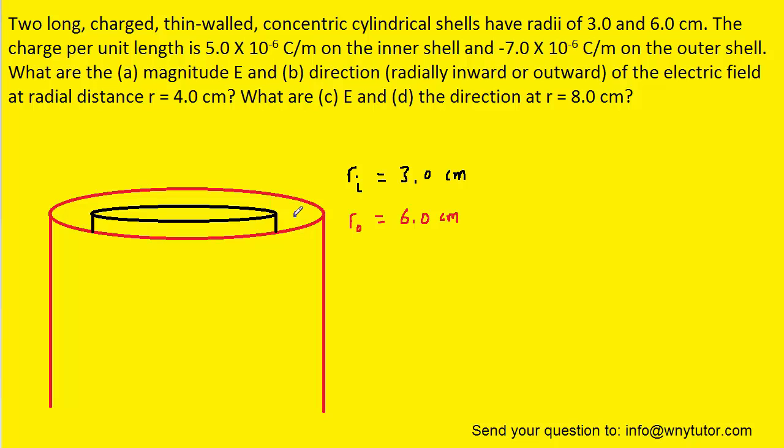So we can use Gauss's law and specifically we will use it as it applies to cylindrically symmetrical situations. In such situations, we know the electric field is equal to the linear charge density divided by 2π epsilon times the distance away from the cylindrical shell.